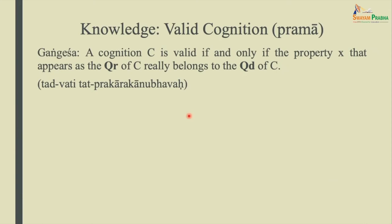For example, first we talk about knowledge. We take the typical Platonic formulation of that — although it has been refuted by Gettier and others, we still use it because it is easy to understand. So a piece of knowledge is a justified true belief. In our case, we call a valid cognition Prama.